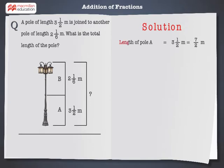Length of pole A is 3 and 1 by 2 meters which is equal to 7 by 2 meters. Length of pole B is 2 and 1 by 6 meters which is equal to 13 by 6 meters.